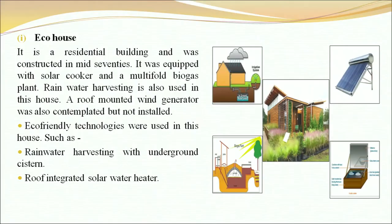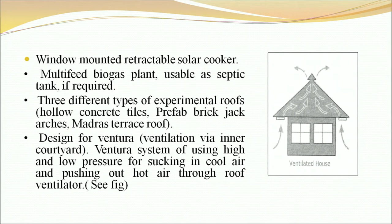The eco house is a residential building constructed in the mid-1970s, equipped with a solar cooker and a multi-fold biogas plant. Rainwater harvesting with an underground cistern is also used in this house. A roof-mounted wind generator was contemplated but not installed. Eco-friendly technologies used include a roof-integrated solar water heater, window-mounted retractable solar cooker, multi-feed biogas plant usable as a septic tank, three types of experimental roofs including hollow concrete tiles, pfab brick jack arches, and Madras terrace roof, and a ventура system using high and low pressure to suck in cool air and push out hot air through roof ventilators.